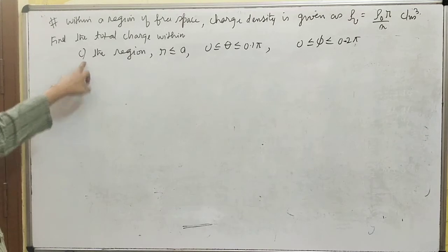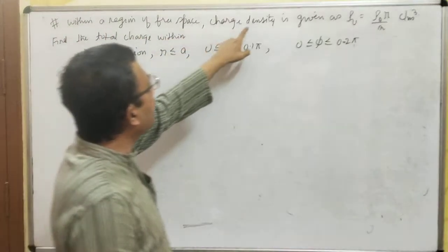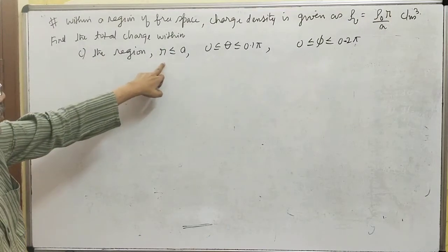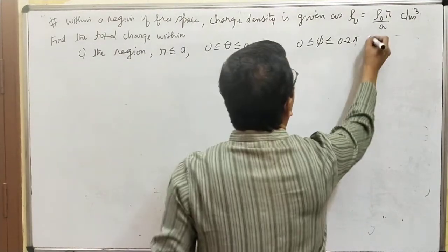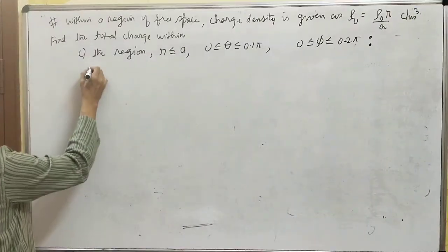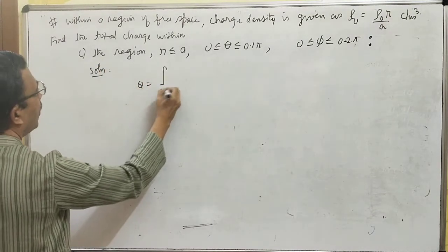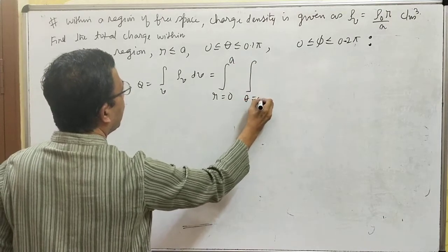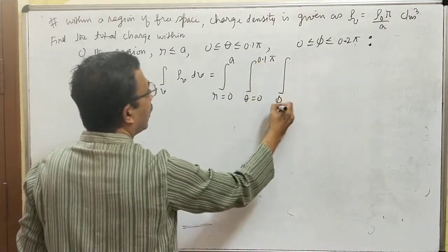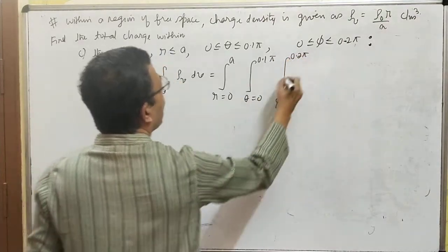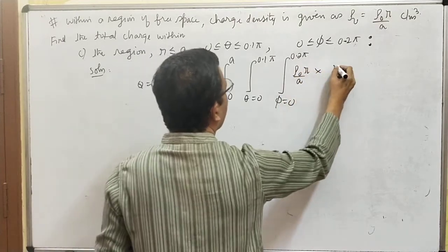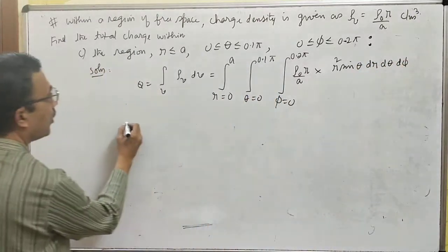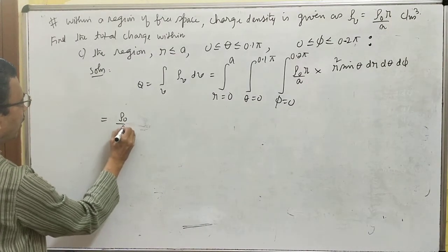The same problem has one more part — Part C. Reading the problem again: within a region of free space, charge density ρᵥ = ρ₀ · (r/a) coulombs per meter cube. Find the total charge within the region r ≤ a, θ from 0 to 0.1π, φ from 0 to 0.2π. Setting up: Q = ∫∫∫ ρᵥ dV, with r from 0 to a, θ from 0 to 0.1π, φ from 0 to 0.2π, and ρᵥ = ρ₀ · (r/a), dV = r² sinθ dr dθ dφ.